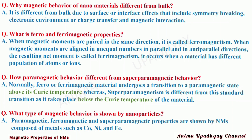What are ferromagnetic properties? When magnetic moments are paired in the same direction, it is called ferromagnetism. When magnetic moments are aligned in unequal numbers in parallel and anti-parallel directions, the resulting net moment is called ferrimagnetism. It occurs when a material has different populations of atoms or ions.